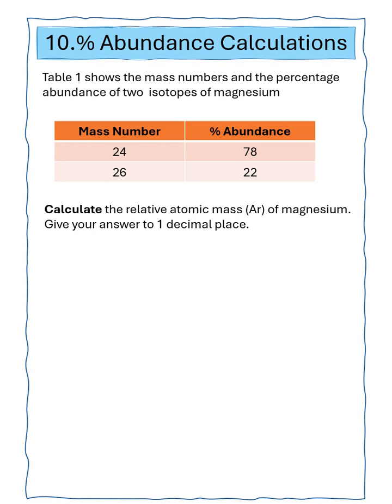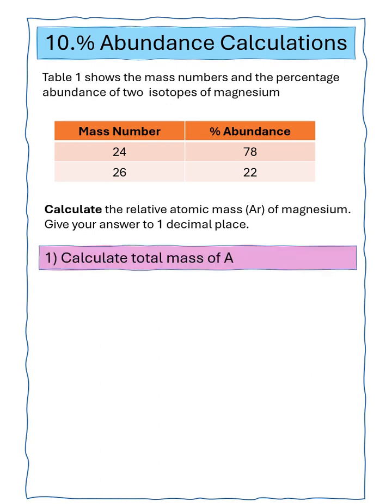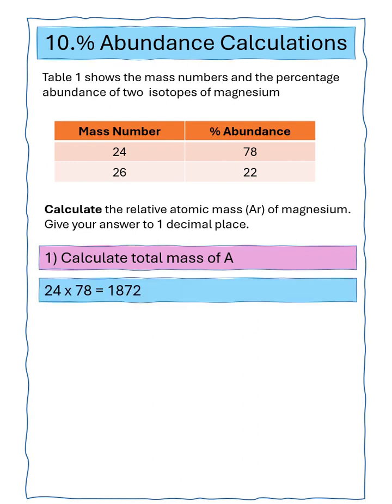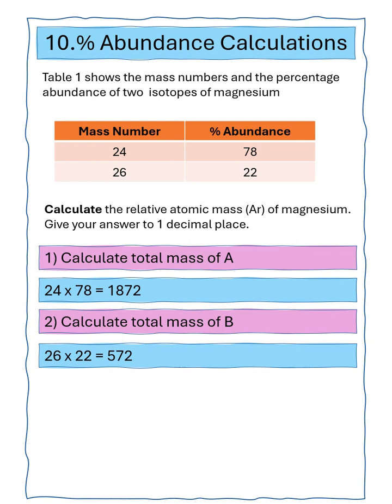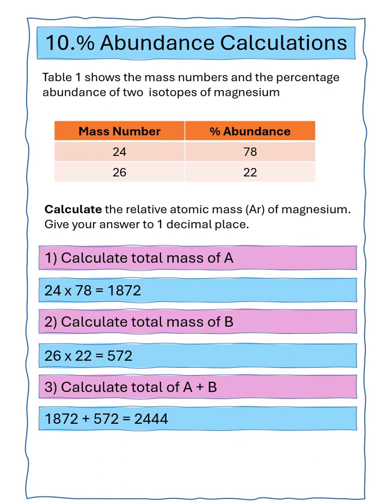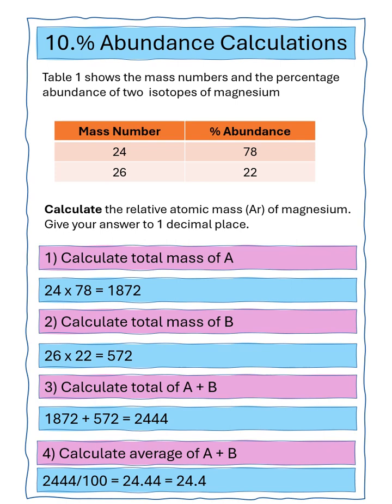Question ten says table one shows the mass number and percentage abundance of two isotopes of magnesium. Calculate the relative atomic mass of magnesium, giving our answer to one decimal place. Total mass of A: 24 times 78, giving 1872. Total mass of B: 26 times abundance 22, giving 572. Adding the two totals gives 2444. Dividing by 100 gives 24.44, or 24.4 to one decimal place.